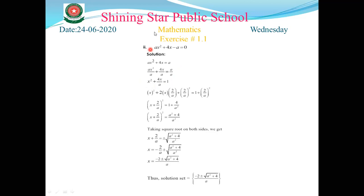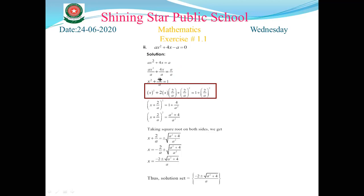After dividing by a, we have x² + (4/a)x = 1. The coefficient of x² is now 1. In the third step, b is 4/a. Half of b is 2/a. So we add (2/a)² to both sides.